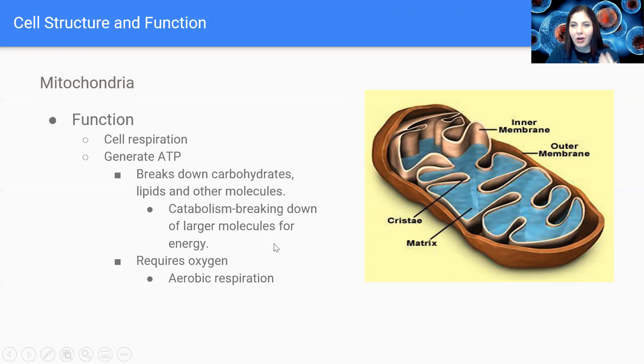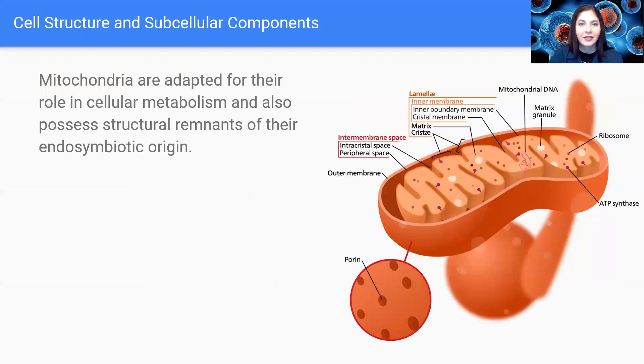So next up, we have this being called aerobic respiration. Now the reason we call it aerobic respiration is because this process requires oxygen. So mitochondria are adapted for their role in cellular metabolism and also possess structural remnants of their endosymbiotic origin. And we're going to get into that at the end of this lecture.